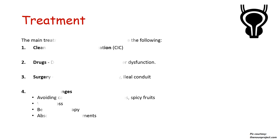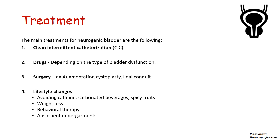Treatment of neurogenic bladder comprises clean intermittent catheterization, use of drugs including injections of botulinum toxin at times depending on the type of bladder dysfunction, surgery such as augmentation cystoplasty to reduce intravesical pressure and increase holding capacity, and formation of an ileal conduit. Lifestyle changes include avoiding caffeine, carbonated beverages, and spicy foods which are diuretics, weight loss to prevent stress incontinence, behavioral therapy, and the use of absorbent garments especially in incontinent adults.